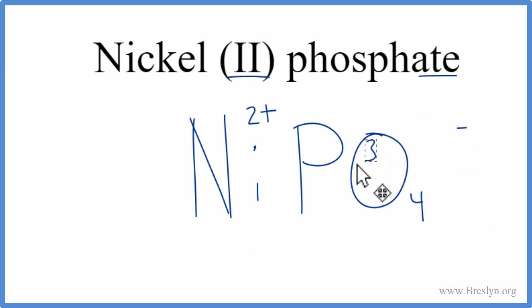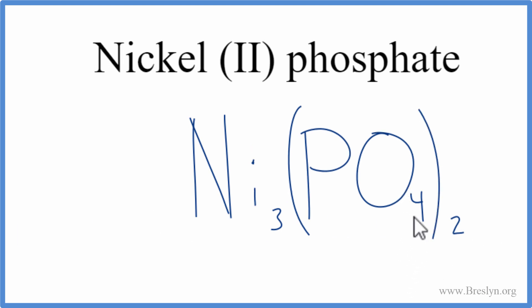We can move the three down here and then the two over here. Get rid of these. And then we need to put parentheses around the phosphate. It's a polyatomic ion and we have two of them. So we'll put parentheses around the phosphate. And this is the formula for nickel two phosphate.